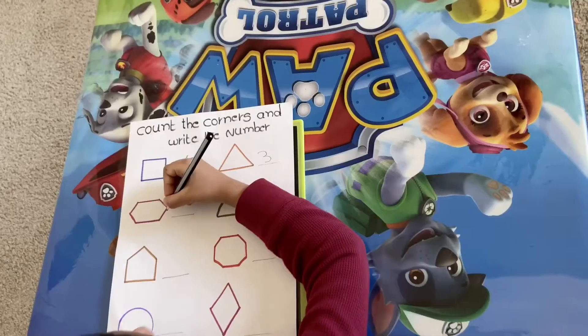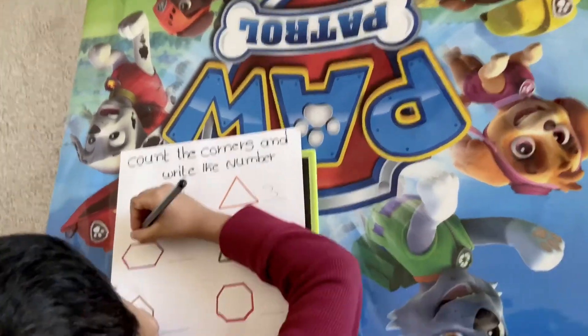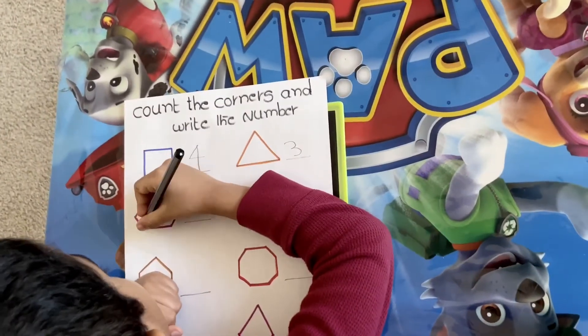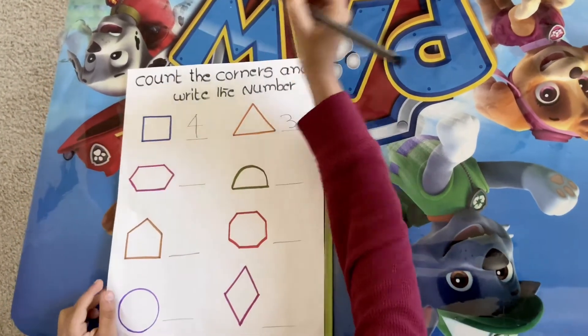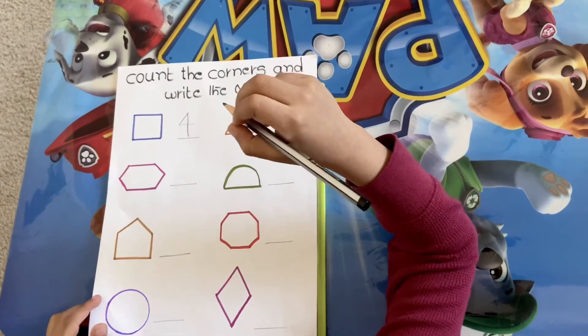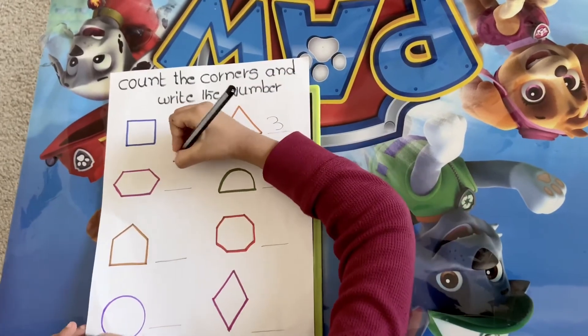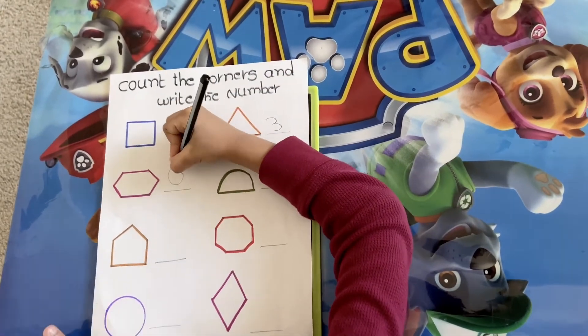And the hexagon has 1, 2, 3, 4, 5, 6 — six corners. So here's the number 6.